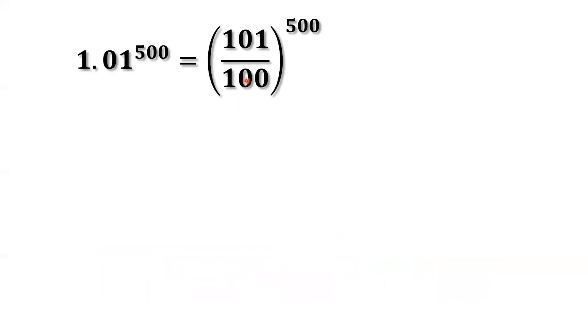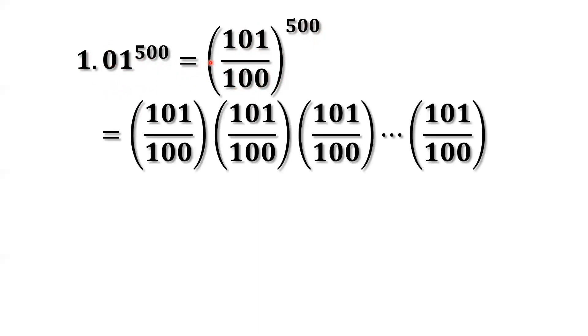Now look at this. 1.01 to the power of 500 equals (101/100)^500. Inside the parentheses, they're equal. So here, this is a 500 product of same item, 101 divided by 100. So here, that's 500 items in this product.